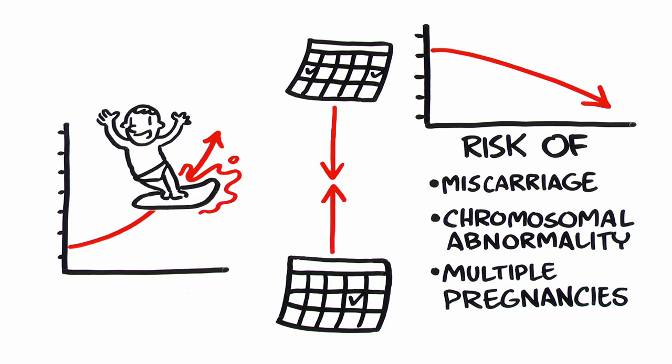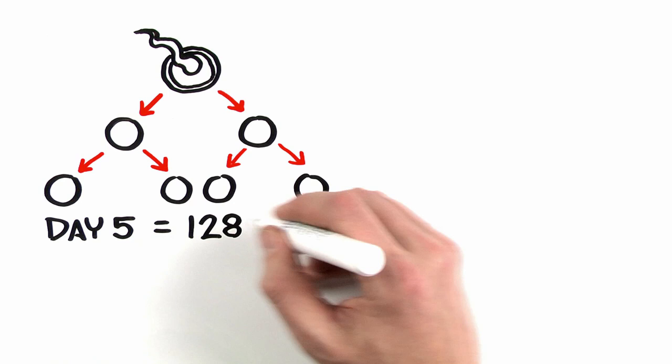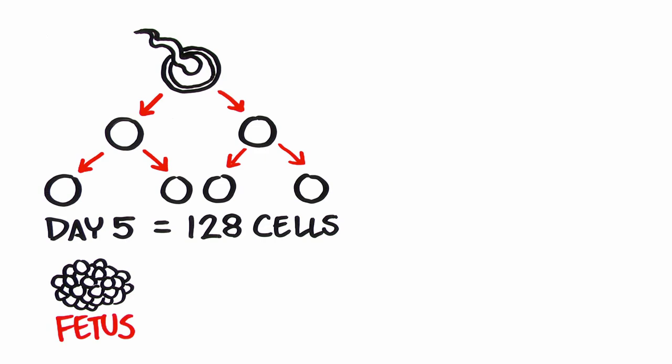Here's how it works. The fertilized egg divides into two cells, then four, then eight, and so on. By day five, there are about 128 more distinctive cells. One cluster of cells will become the fetus, another the placenta.